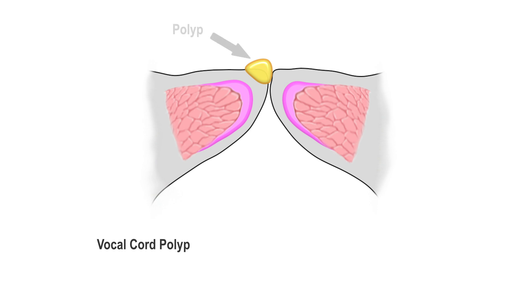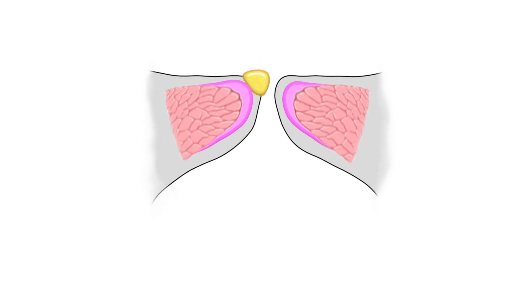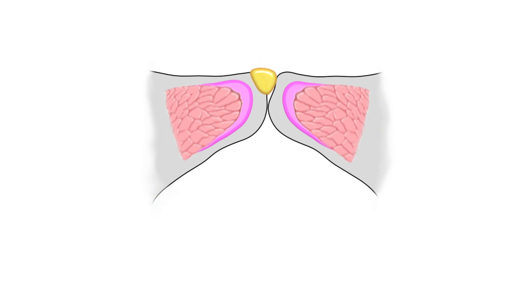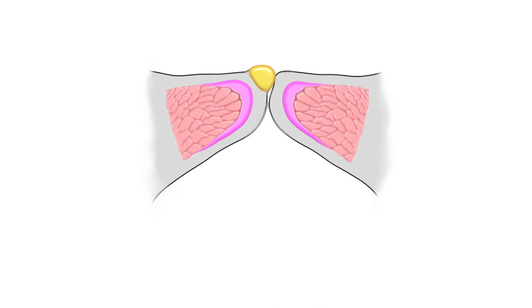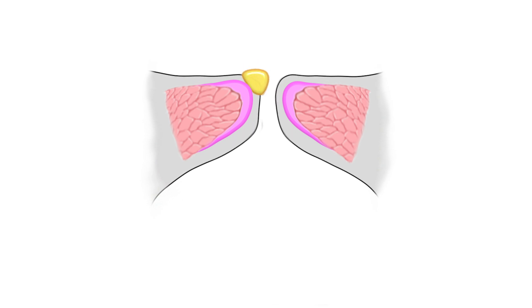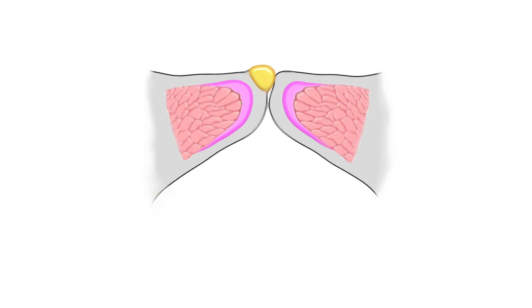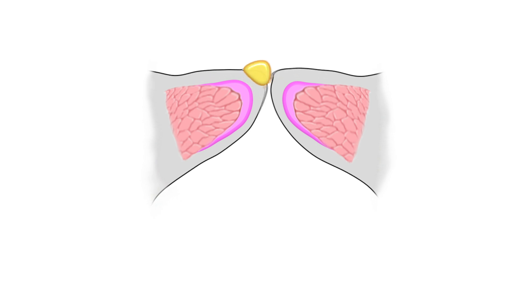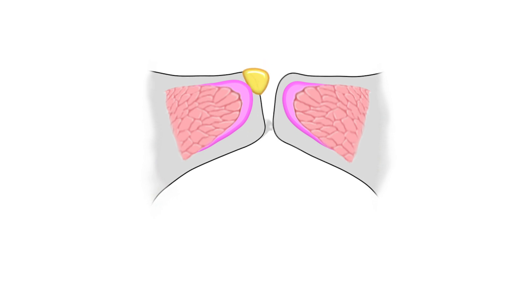A vocal cord polyp, just like a nodule, affects the mucosal lining, but instead of a callus-like appearance, it has a more blister-like appearance. Just as with a cyst and nodule, it can affect the voice by disrupting the vocal fold vibration.